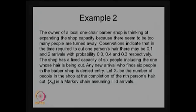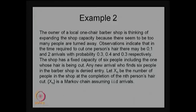Now I am going to define the random variable. Let Xn be the number of people in the shop at the completion of the nth person's haircut. This is a very different stochastic process. Usually the parameter space is time, but here the parameter space is the number of people in the shop. The n represents the person who leaves after the haircut, and the random variable is how many people are in the system when the nth person leaves — so you should not count that person when finding the values of Xn.